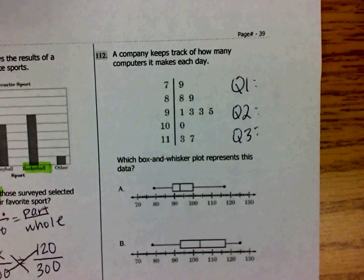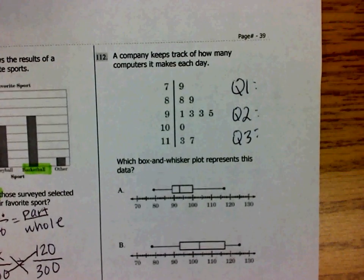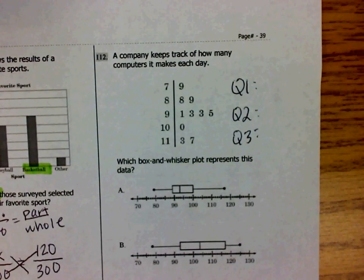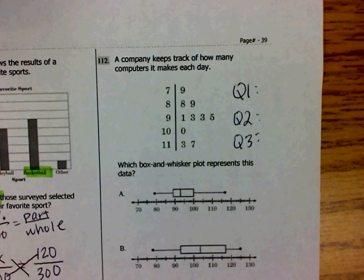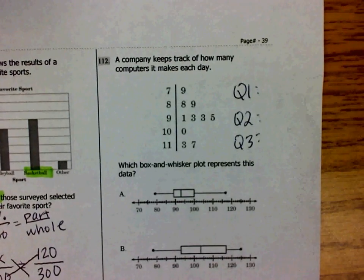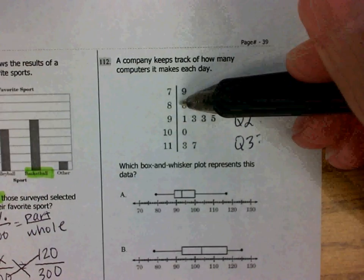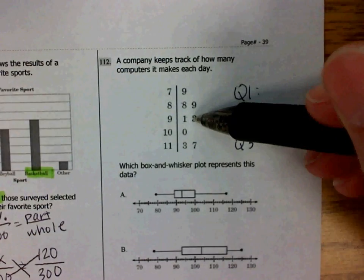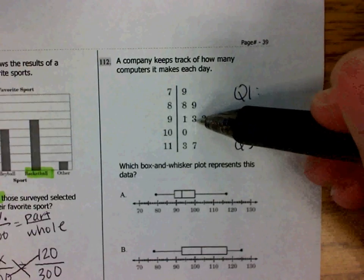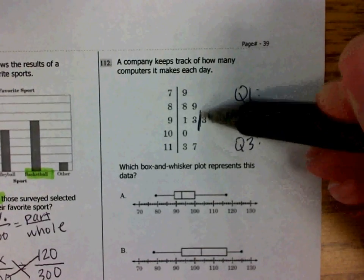I have 10 leaves. 10 is an even number, which means when I find the median, it's going to be between two values. Half of 10 is 5, so I'm going to count my first five data values and draw a line. When I counted five data values, I got to the number 93. I'm going to draw a line at 93.